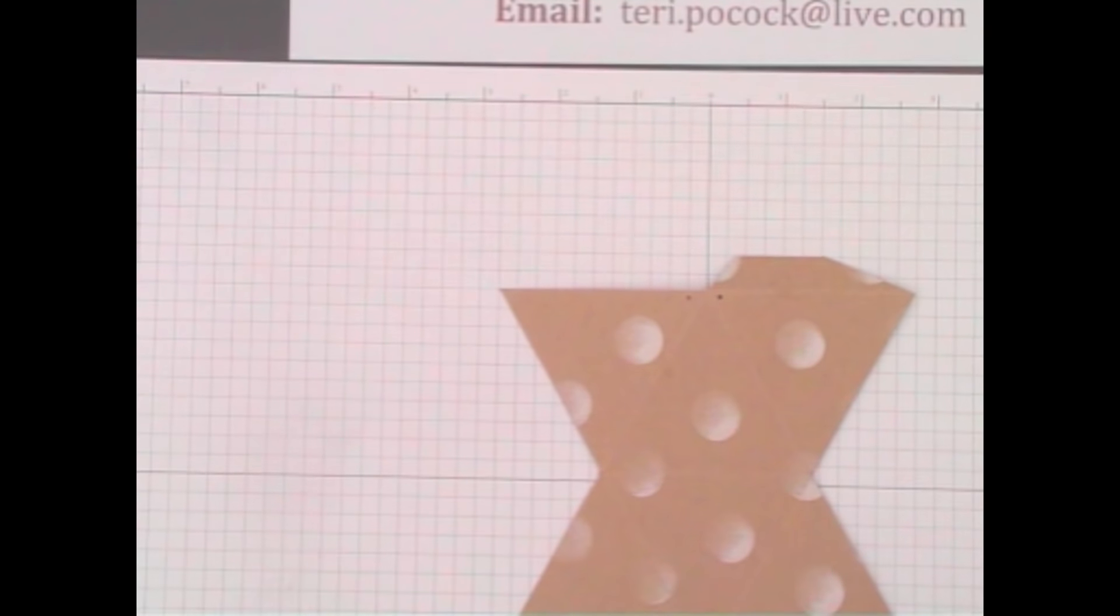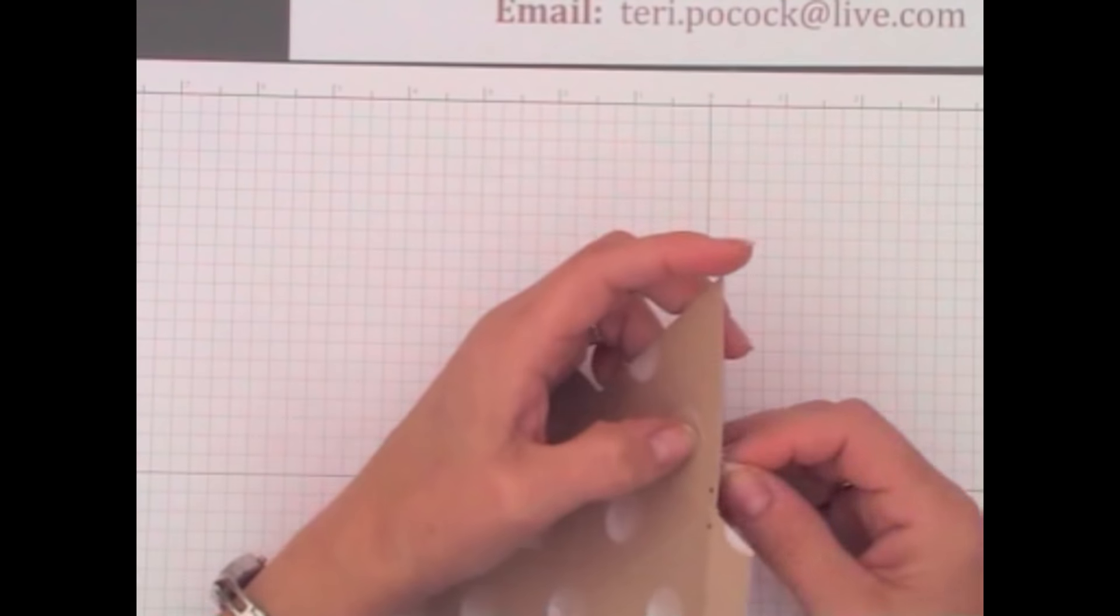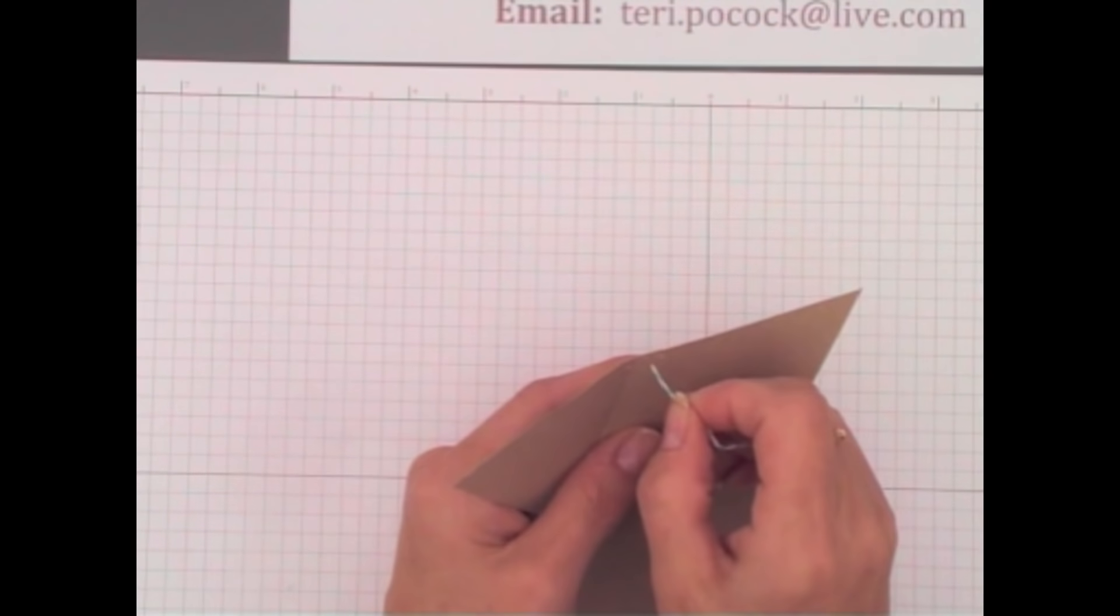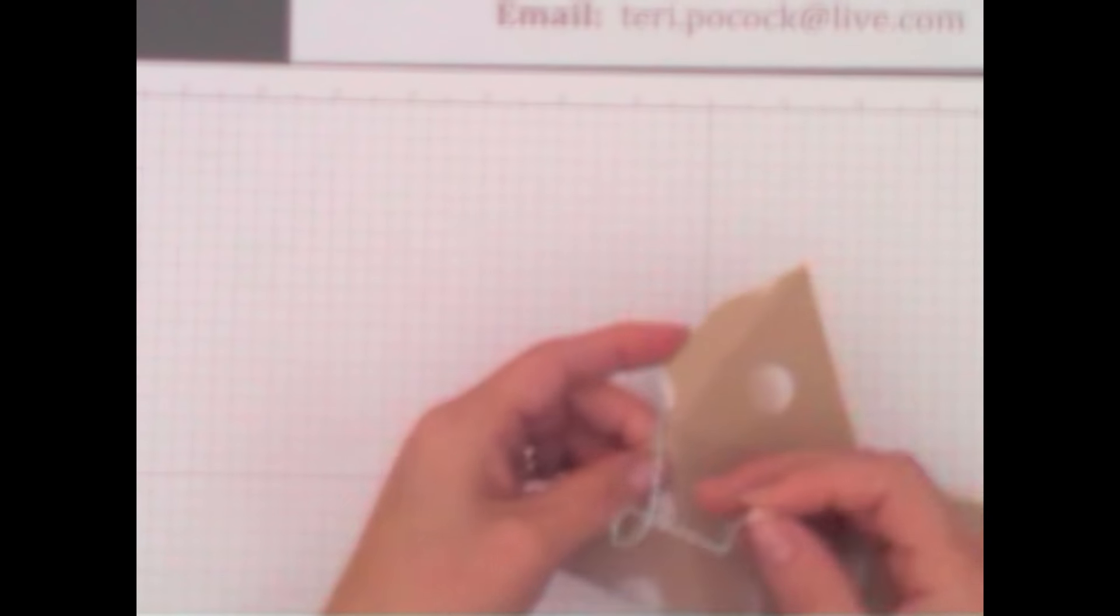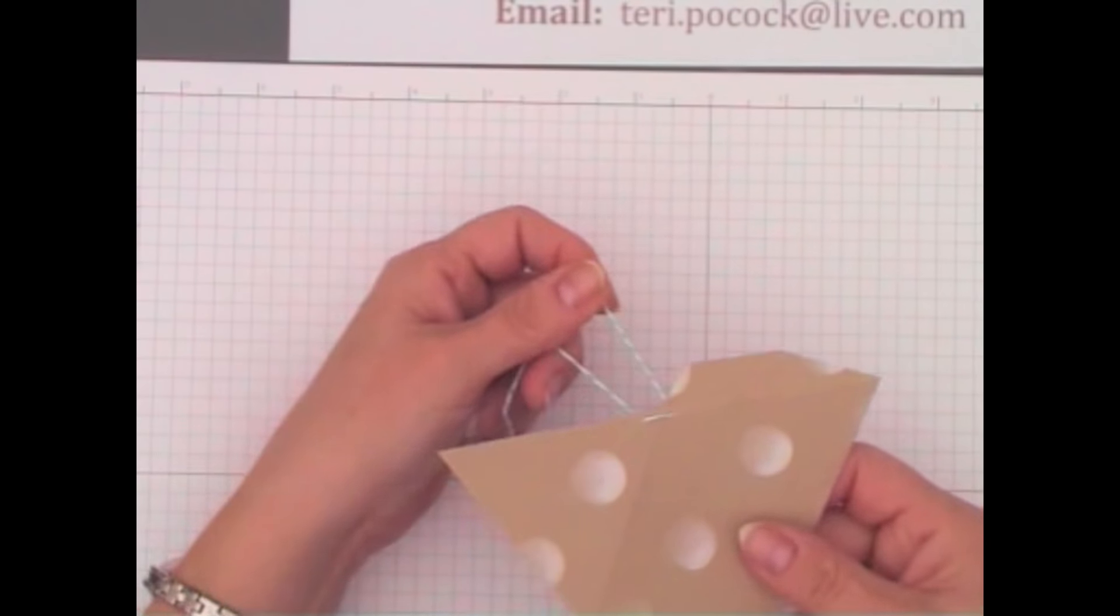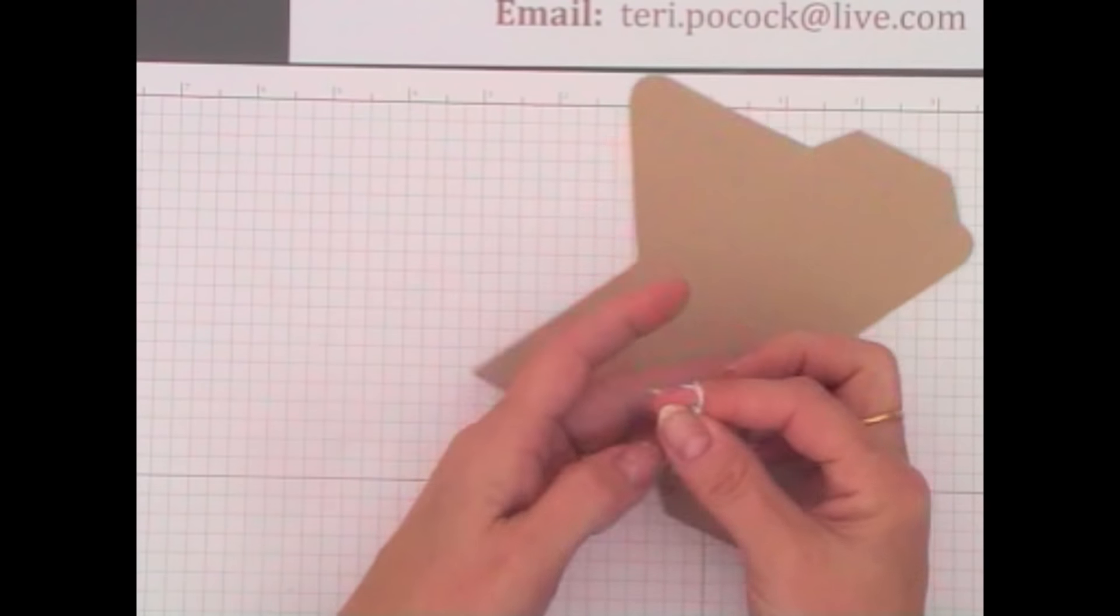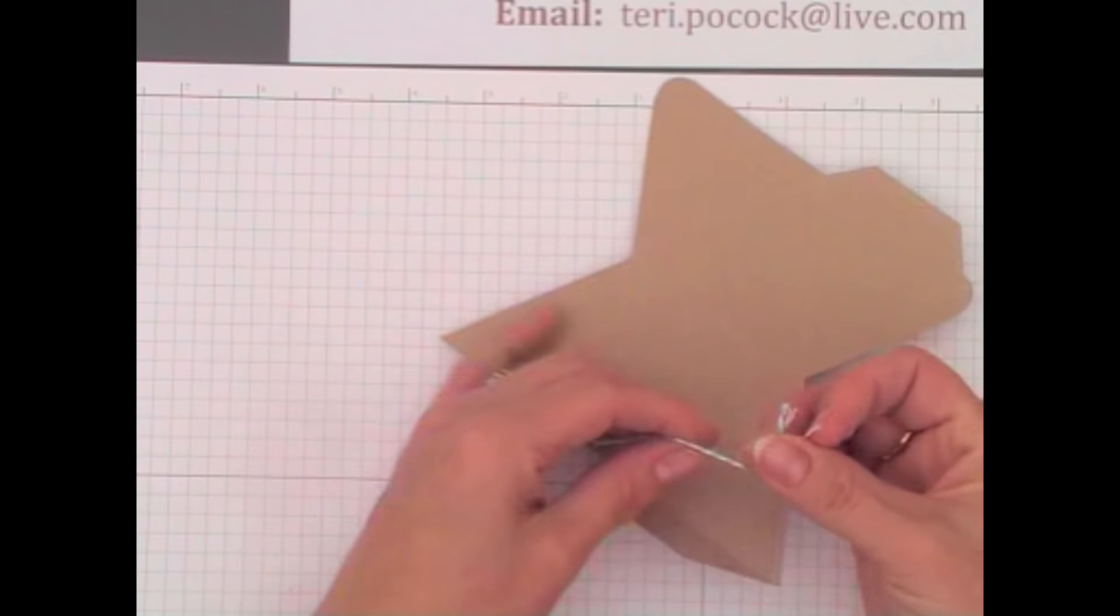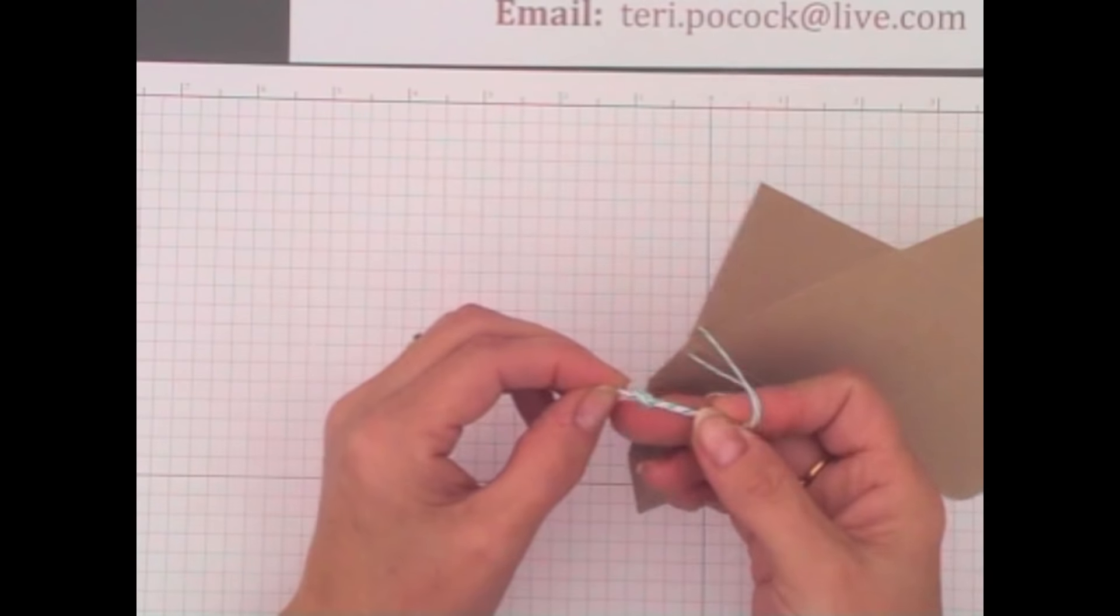Then we need a piece of baker's twine. I'm using Bermuda Bay. It's about 20cm long which is about 8 inches. That needs to go through the back towards the front and then back through the other hole. So we've got a loop on the front. Then if you get your ends together and just tie a knot as close to the ends as you can get. Make it nice and tight.